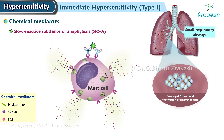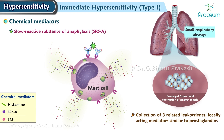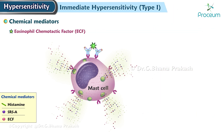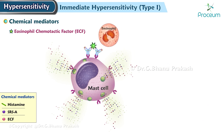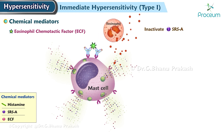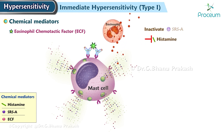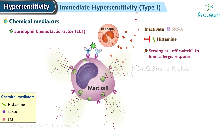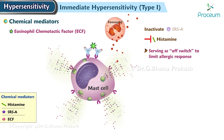SRSA is a collection of three related leukotrienes, locally acting mediators similar to prostaglandins. Eosinophil chemotactic factor, which specifically attracts eosinophils to the area. Interestingly, eosinophils release enzymes that inactivate SRSA and may also inhibit histamine, perhaps serving as an off-switch to limit the allergic response.